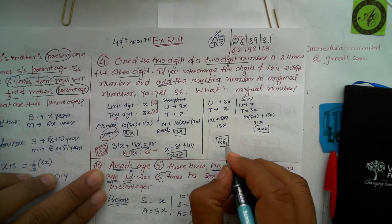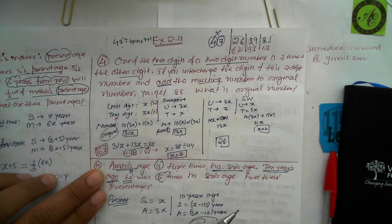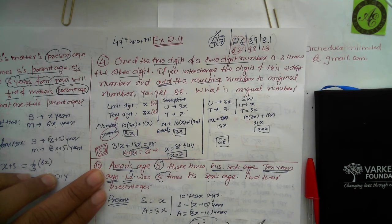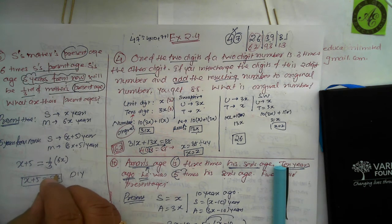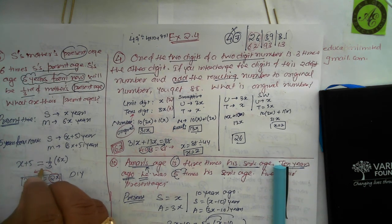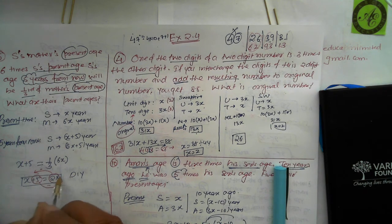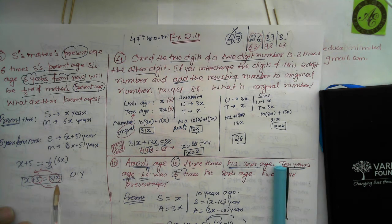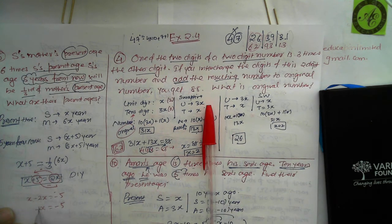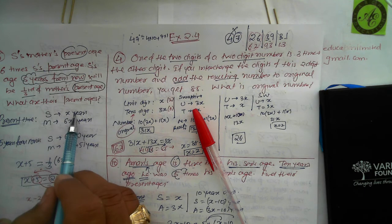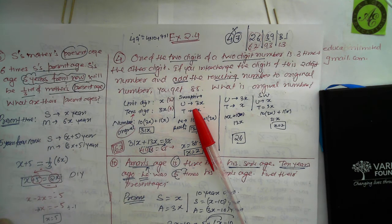Solving S's age equation: x + 5 = 2x. Taking x to the left and numbers to the right: x − 2x = −5, so −x = −5, giving x = 5. S's present age is 5 years, and mother's present age is 6 × 5 = 30 years.